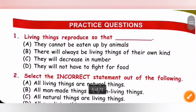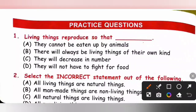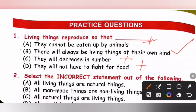Practice question 1: Living things reproduce so that — option A: they cannot be eaten up by animals. No. Option B: there will always be living things of their own kind. Yes. Option C: they will decrease in number. No, reproduction will increase the number. Option D: they will not have to fight for food. No. So living things reproduce so that there will always be living things of their own kind. Option B is the correct answer.